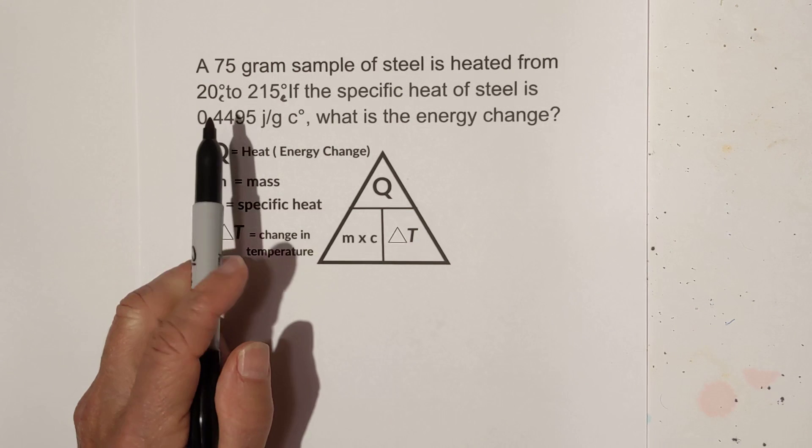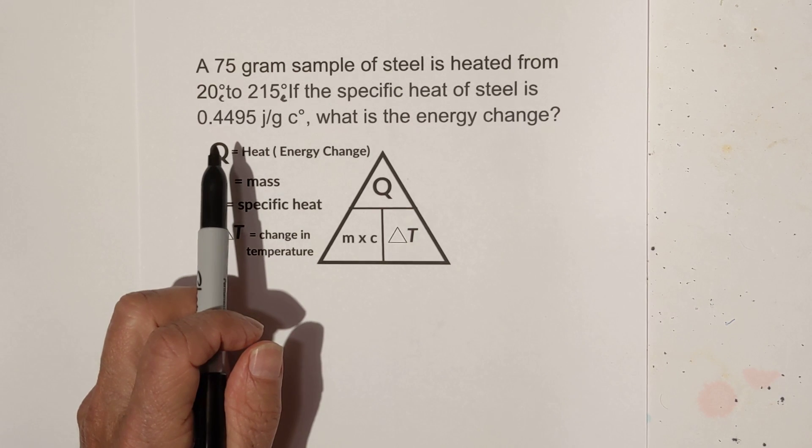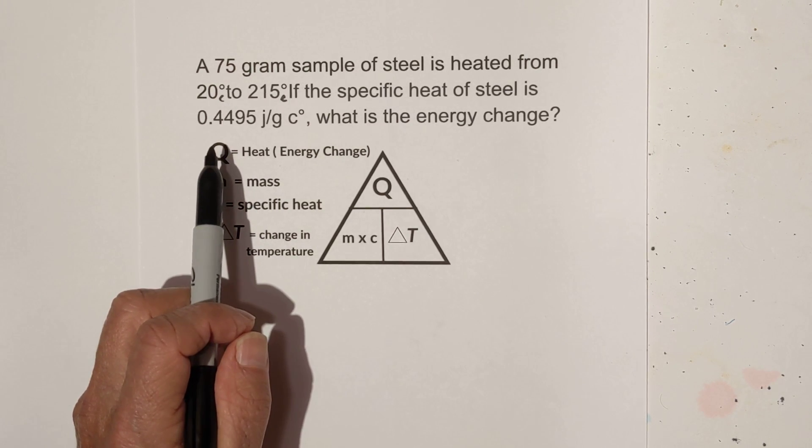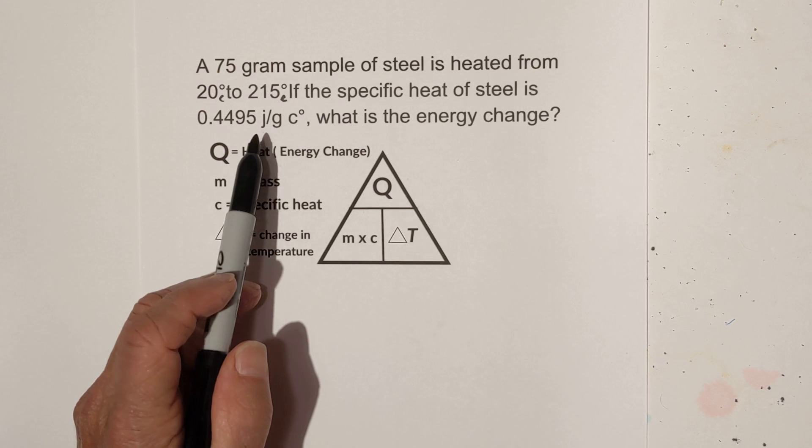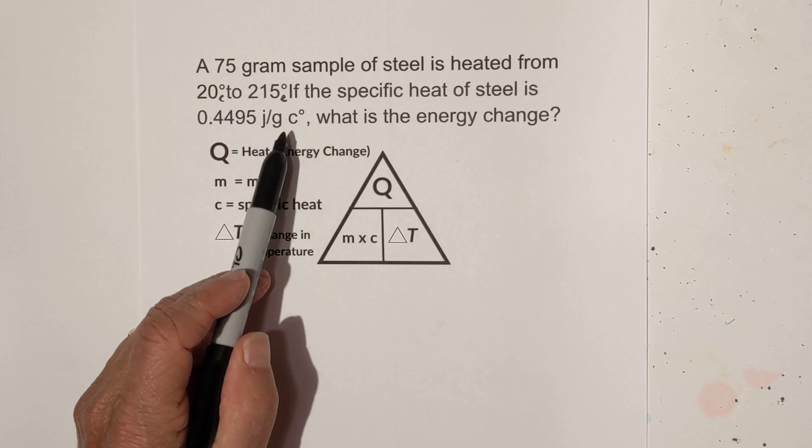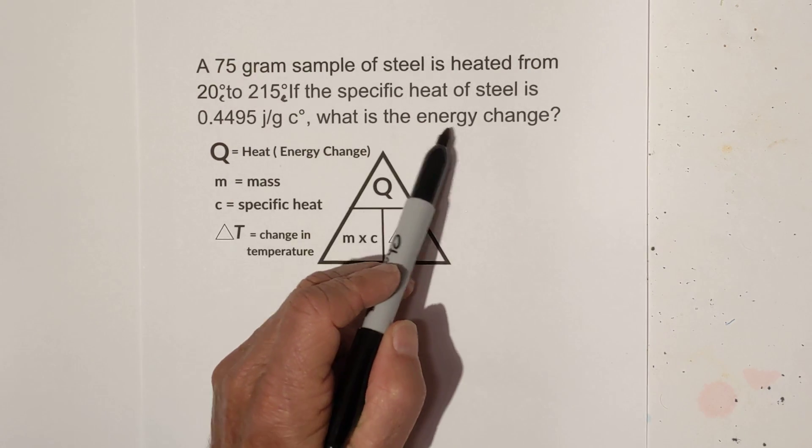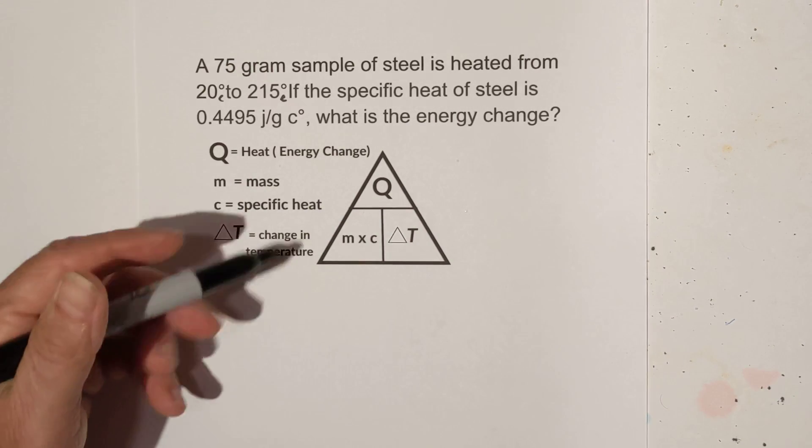A 75 gram sample of steel is heated from 20 degrees to 215 degrees. If the specific heat of steel is 0.4495 joules per gram per Celsius, what is the energy change? So we are looking for the energy change which is Q.